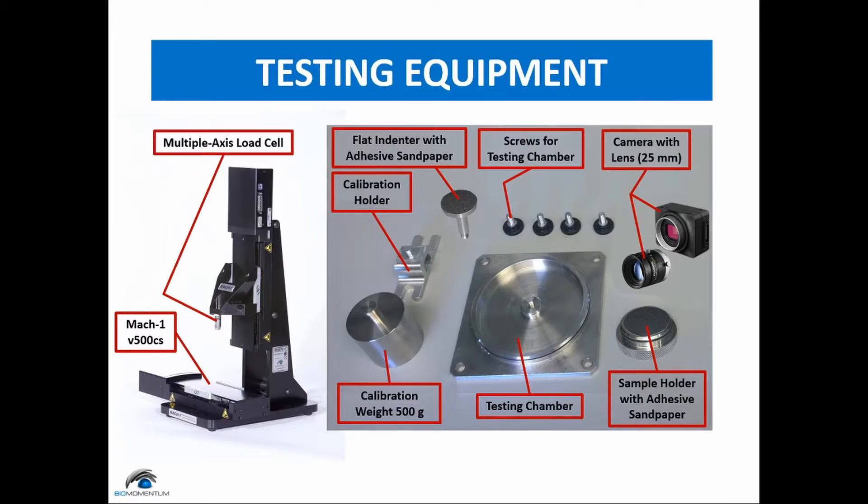a 250N multi-axis load cell, a 500g calibration weight and holder, flat indenter with a diameter of 1.25 inches, silicon carbide P80 grade sandpaper,